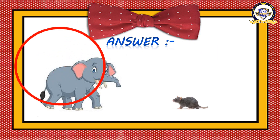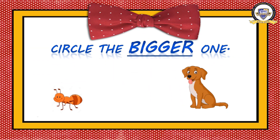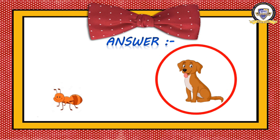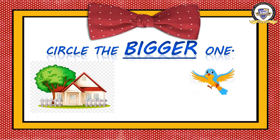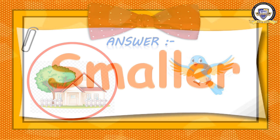Yes, elephant! Elephant is the bigger one and rat is the small one. Ready for the next question? Which is bigger — ant or dog? The answer is dog. Dog is the bigger one and ant is the small one. Next one: house or bird — which is bigger? Yes, house is bigger and bird is a small one.